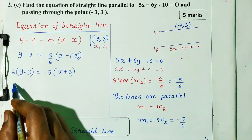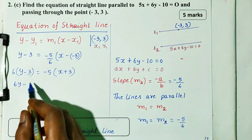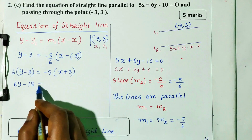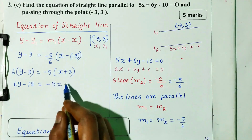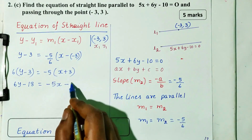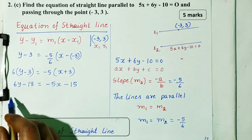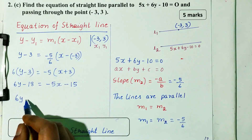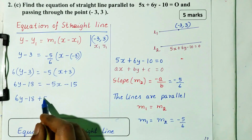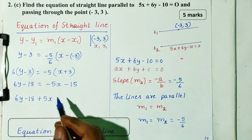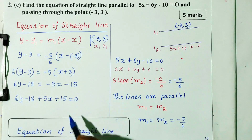Next, we will multiply. 6 into y gives 6y, and 6 into 3 gives minus 18. That is equal to minus into plus gives minus 5 into x gives 5x, and minus into plus gives minus 5 into 3 gives 15. So we have 6y minus 18 equals plus 5x minus 15, which equals 0.